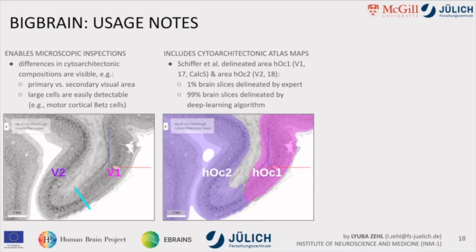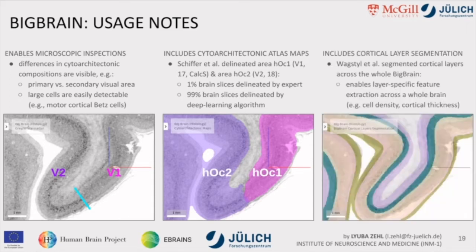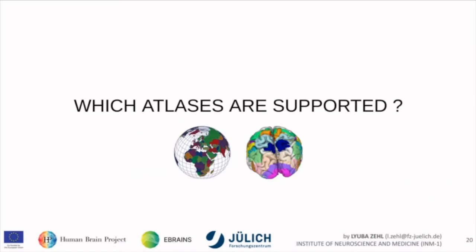Later on we can have a look at the atlases — you'll find more areas in the BigBrain, though some are only simple interpolations between the one-percent delineated expert slices, not fully mapped by the sophisticated algorithm. There is also another publication from Wagstyl et al. who segmented the cortical layers across the whole BigBrain, enabling layer-specific analysis and features across the whole brain, such as cell density measurements in layers or cortical thickness. Combining those two studies you can do that specifically for certain areas.